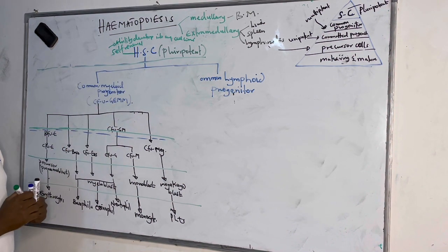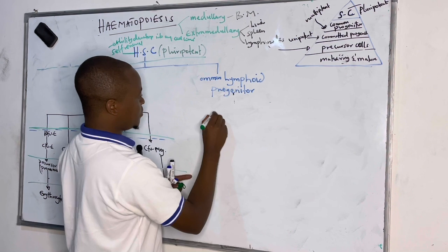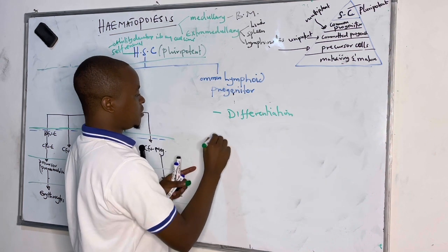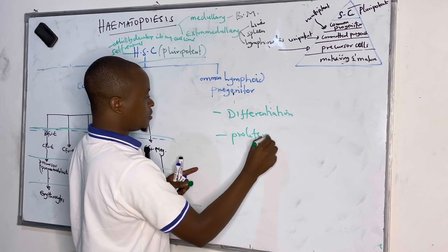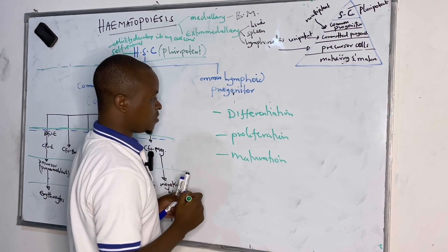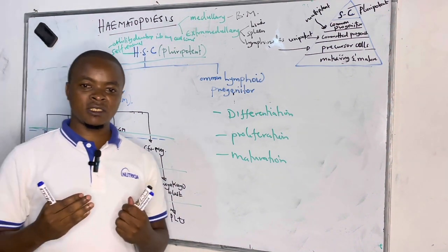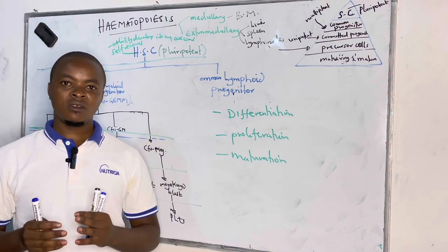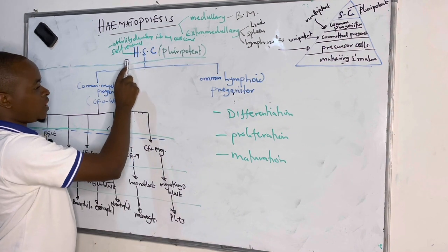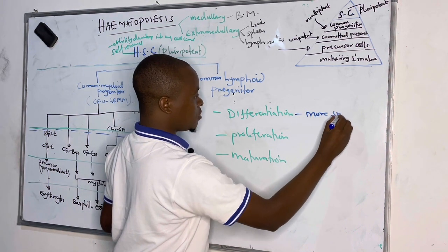The first steps of blood formation are: differentiation, proliferation, and maturation. Differentiation is always the first, whereby the hematopoietic stem cell — also called the prepotent stem cell or hemocytoblast — undergoes differentiation, meaning it becomes more specialized.